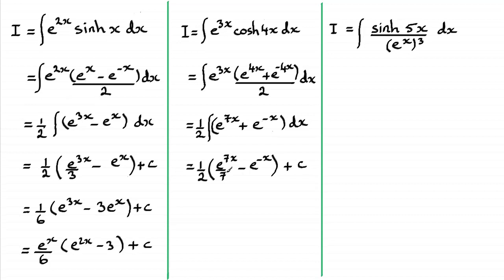So again you could leave it like this. I'm pulling out a seventh though to join that half, so we're going to get 1 14th out the front. And if you adjust the inside of the bracket, you'll find you've got e to the 7x minus 7e to the power minus x plus that constant of integration c.